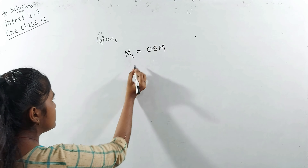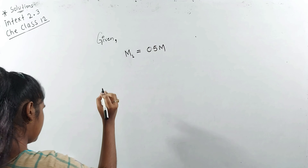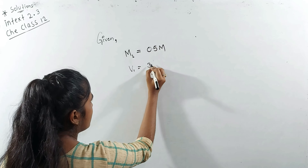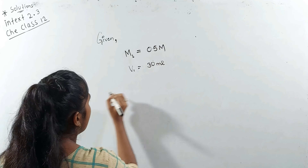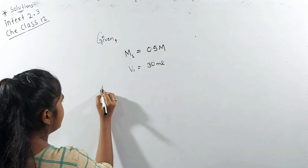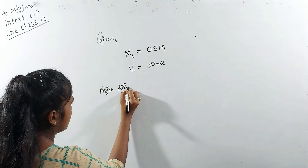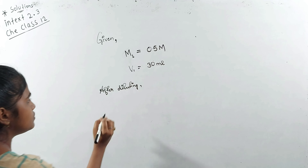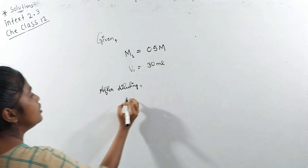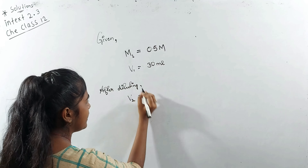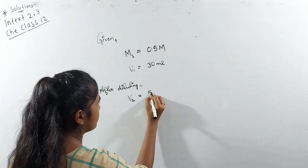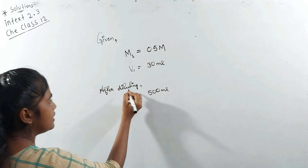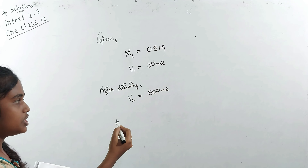Now we have question 2.3 part B. We have to find the molarity of: 30 mL of 0.5 M H₂SO₄ diluted to 500 mL. We have molarity and volume, and we are told the solution is diluted — meaning water is added and the volume changes.